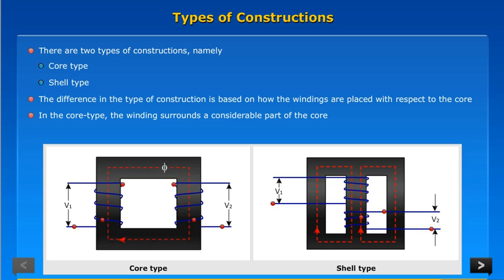In the core type, the winding surrounds a considerable part of the core. In the shell type, the core surrounds the winding.